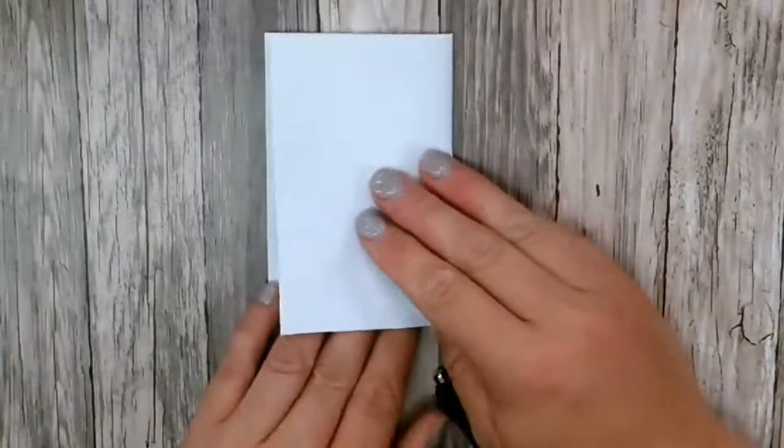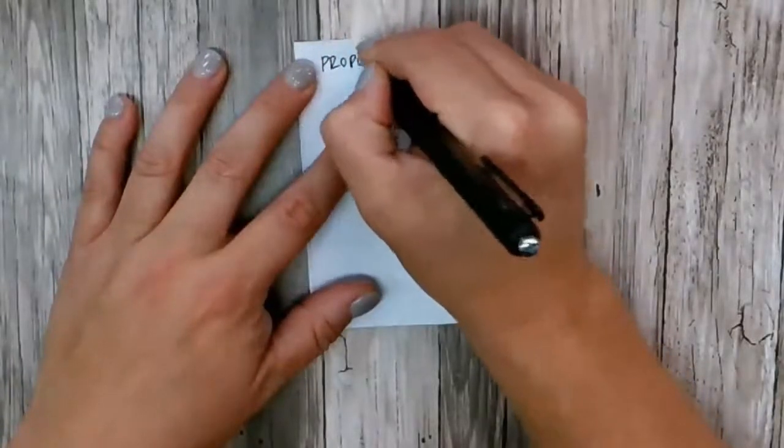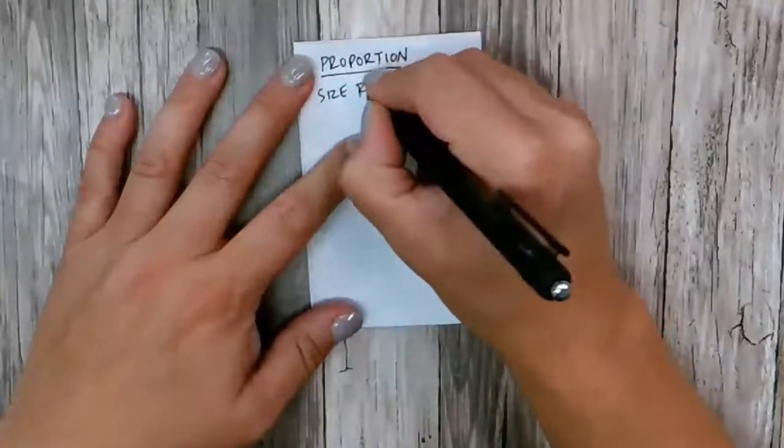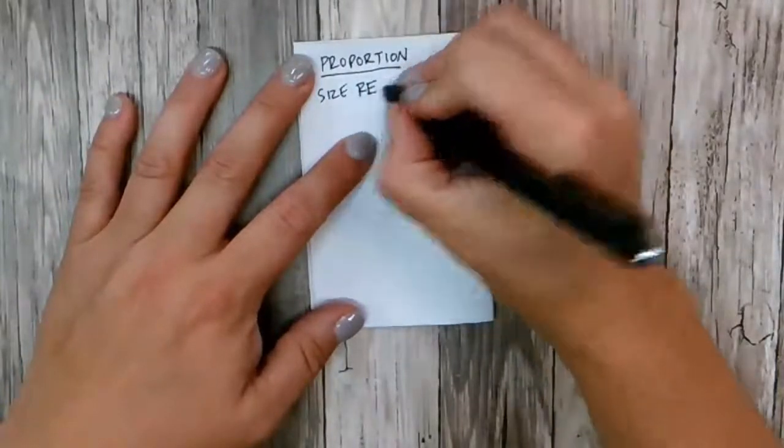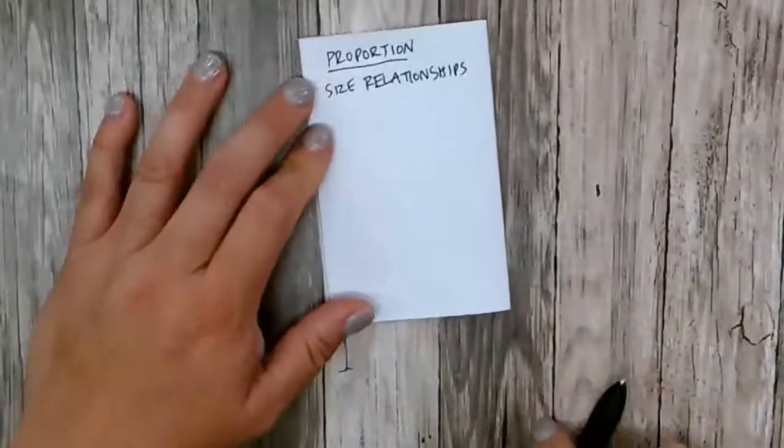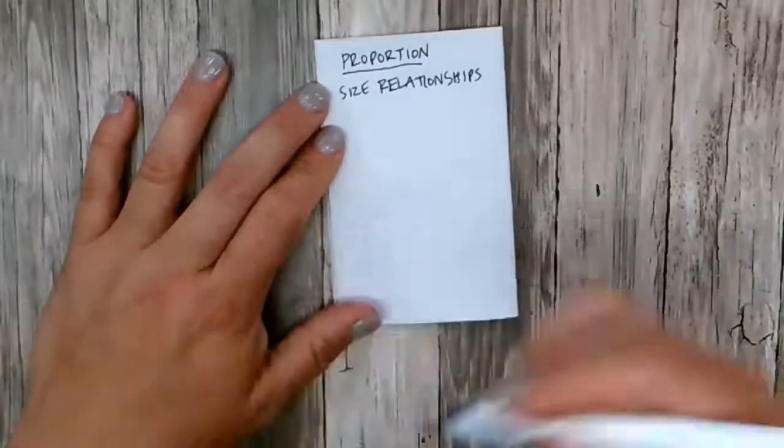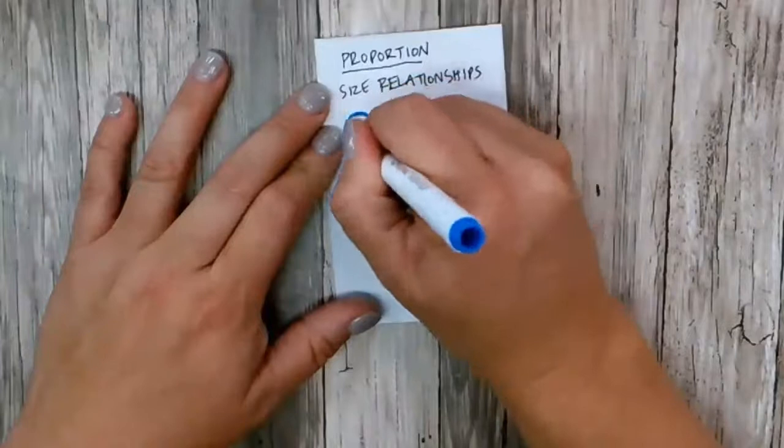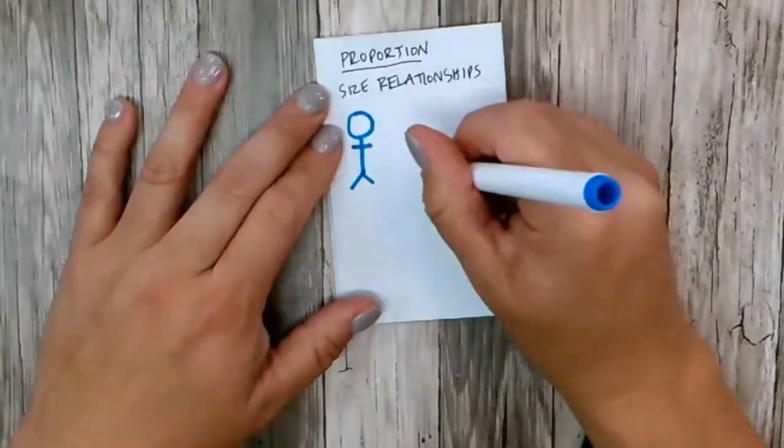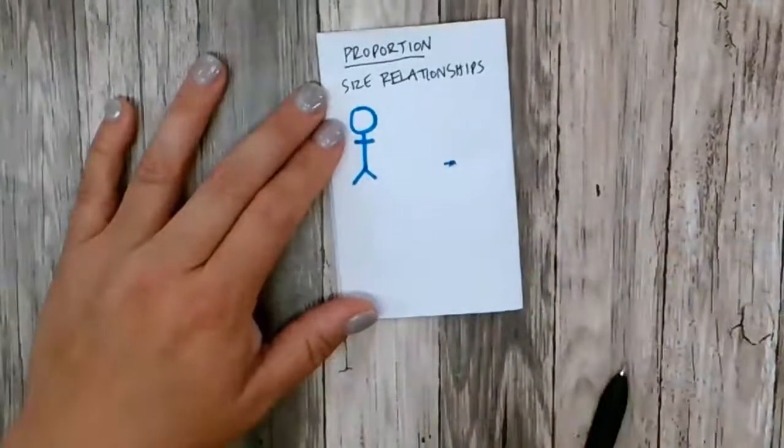And the last one is proportion. And this is all about size relationships. So for example, we have a person is usually bigger than an ant. Got a little ant here. That would be in proportion.